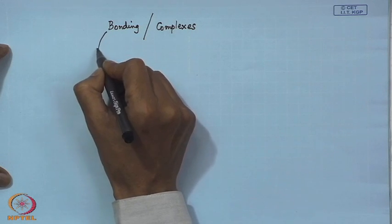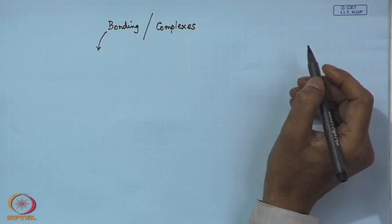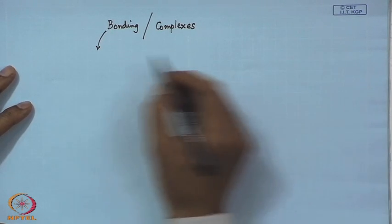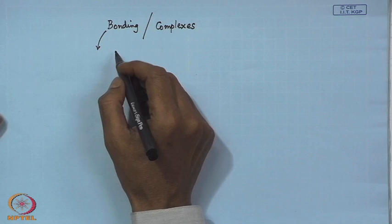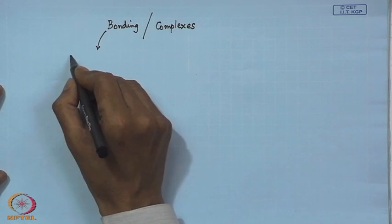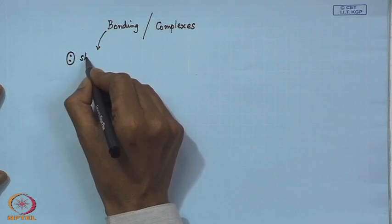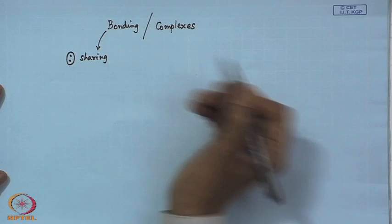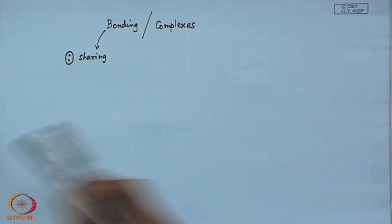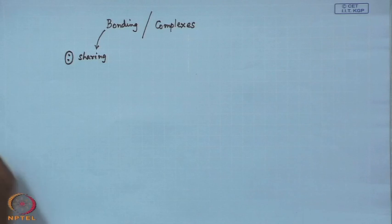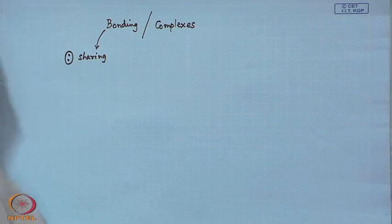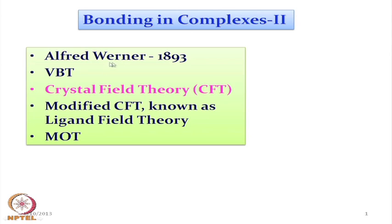At this particular point, when people were talking about this bonding, quantum mechanics was not developed at that time, and the only idea was that electron pairs can be utilized for sharing. So, the historical perspective for this bonding nature — in this second part of bonding in complexes — we will see that during 1893, when Alfred Werner proposed this sort of complexes.